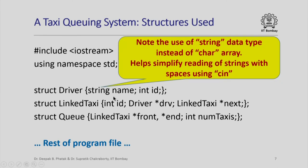Note also that while in earlier lectures when we talked about the structure driver we had used a character array for name, we have switched over to the string data type instead of a character array for the member named name. We have done this because it really helps simplify reading of strings with spaces using cin. The name of a driver may have spaces in it, and that is the only reason why we have changed the data type from a character array to a string.